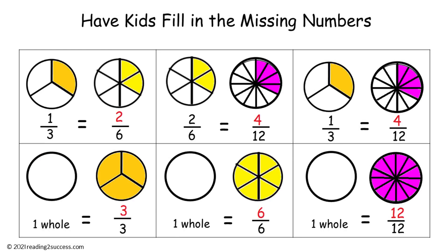Now have kids fill in the missing number for each numerator — the number of parts colored in. One-third equals two-sixths. Two-sixths equals four-twelfths. One-third equals four-twelfths. One whole equals three-thirds, one whole equals six-sixths, and one whole equals twelve-twelfths.